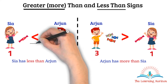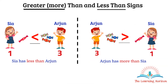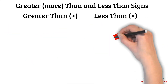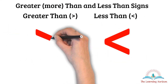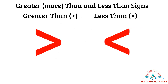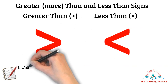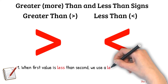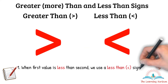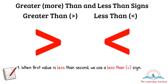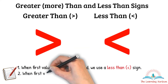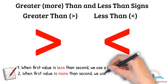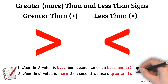These two are the symbols we use to show whether a quantity is less or more. When the first value is less than the second we use the less than sign, and when the first value is more than the second we use the greater than sign.